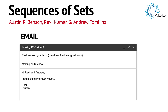This shows up in a variety of datasets. One place would be email. You could look at all of the emails that I send in time order, and the set of recipients on each email forms a sequence of sets. Here's an email I was drafting earlier, and there you see Ravi and Andrew are the set of recipients on this email.